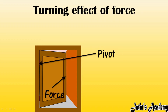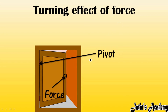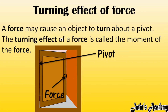What do we mean by the turning effect of force? When any object is fixed at some point — for example, a door fixed at a pivot — and you apply force on the handle, the door starts rotating about that fixed point. This rotation of the door about the fixed point is called the turning effect of force. The definition: a force may cause an object to turn about a pivot.